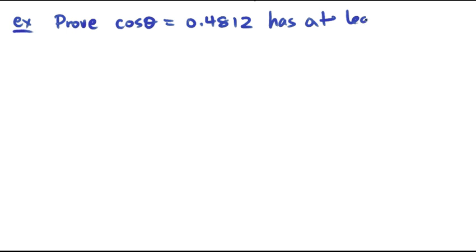We can use the IVT to do some other kinds of questions. For example, we can use it to prove that cos θ = 0.4812 at least once, so prove that this has at least one solution. You should know that it has a lot of solutions.